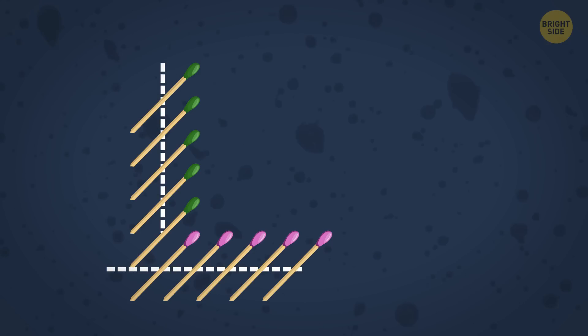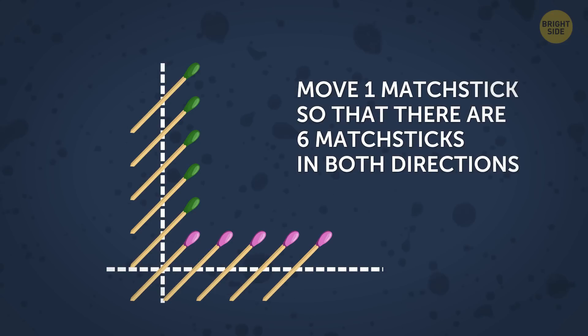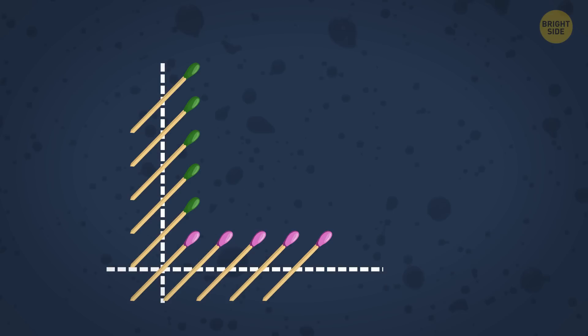There are 10 matchsticks placed in 2 directions. 6 placed vertically and 5 horizontally. The challenge is to move one matchstick so that there are 6 matchsticks in both directions. Ready to see the answer? Just put this matchstick over here.